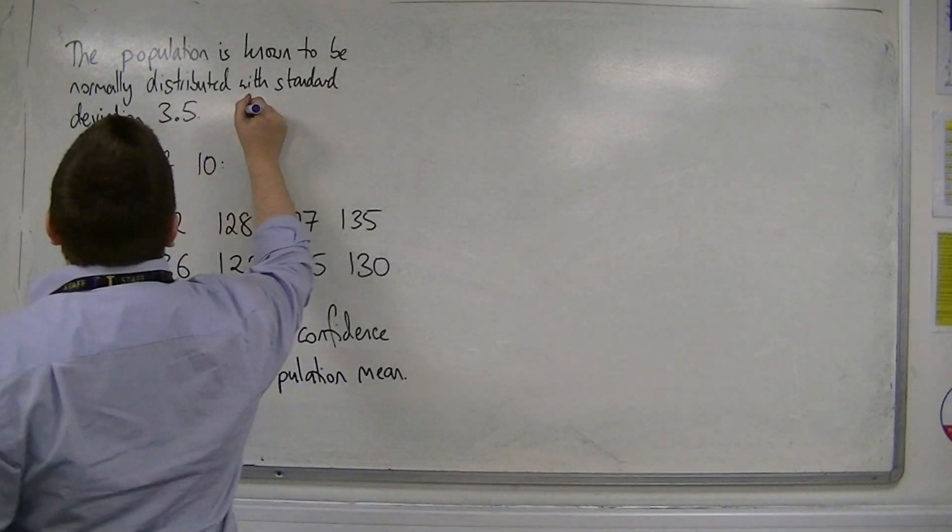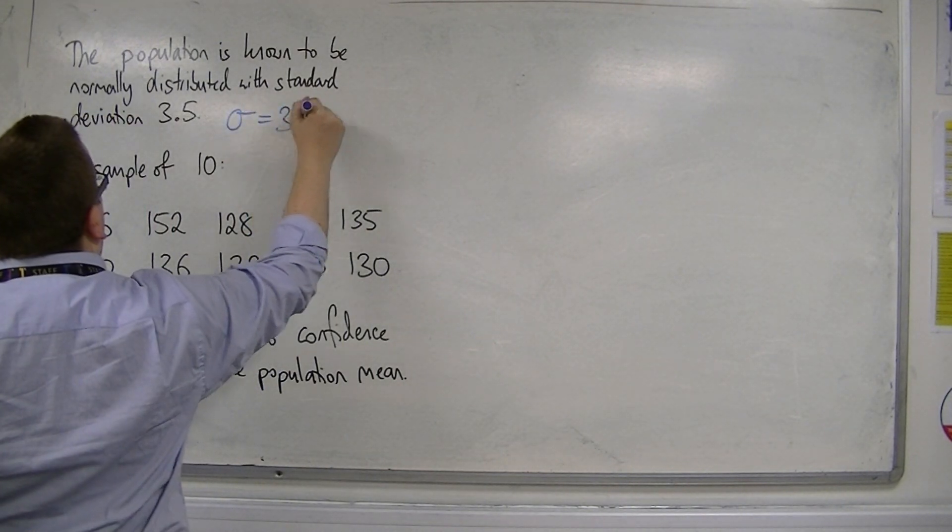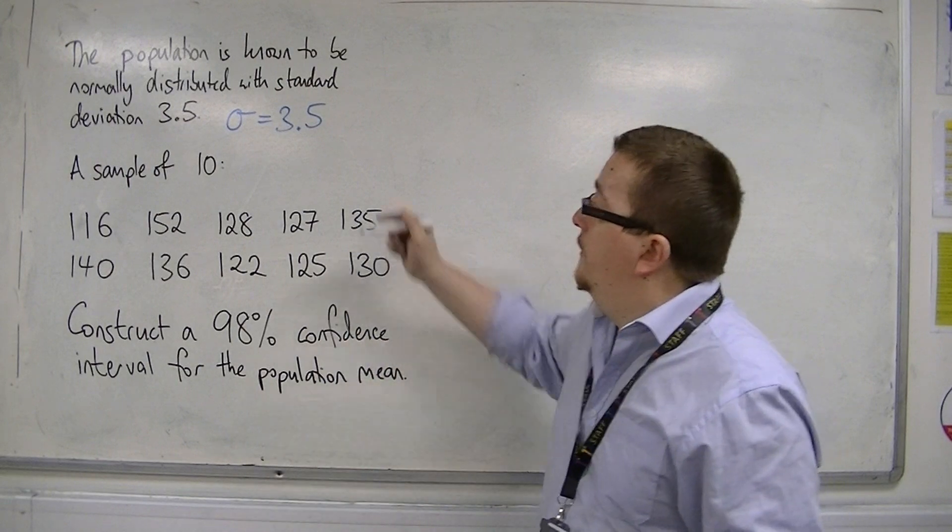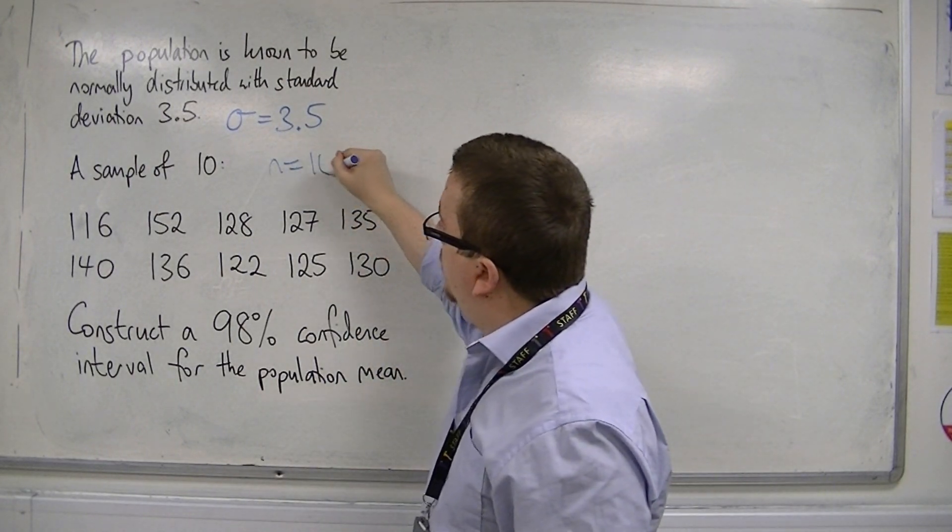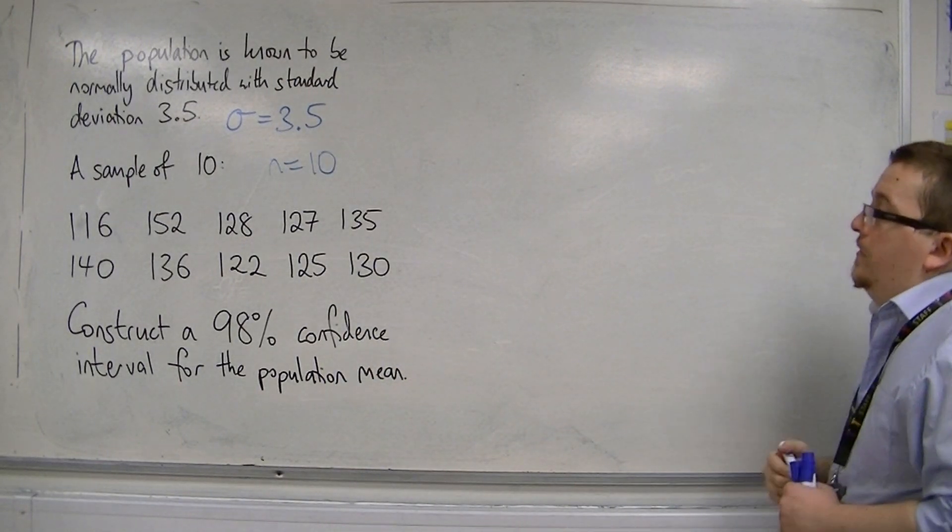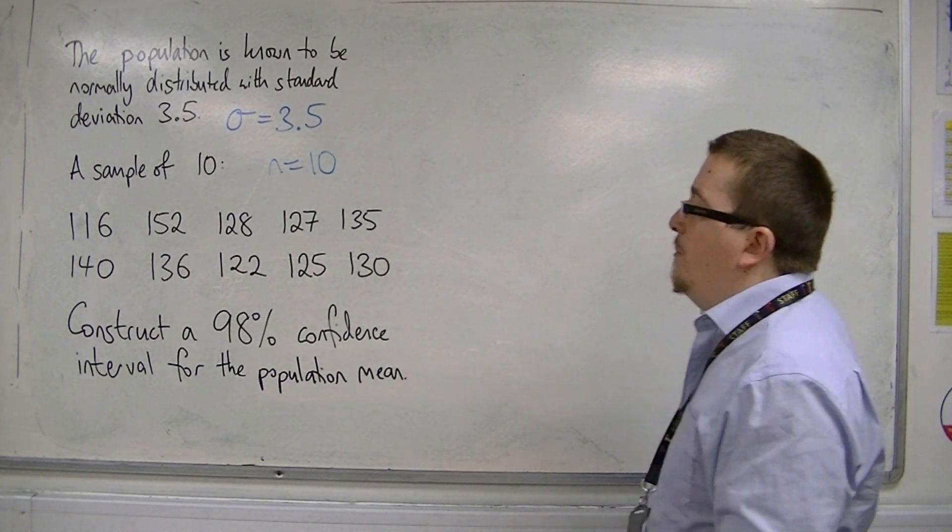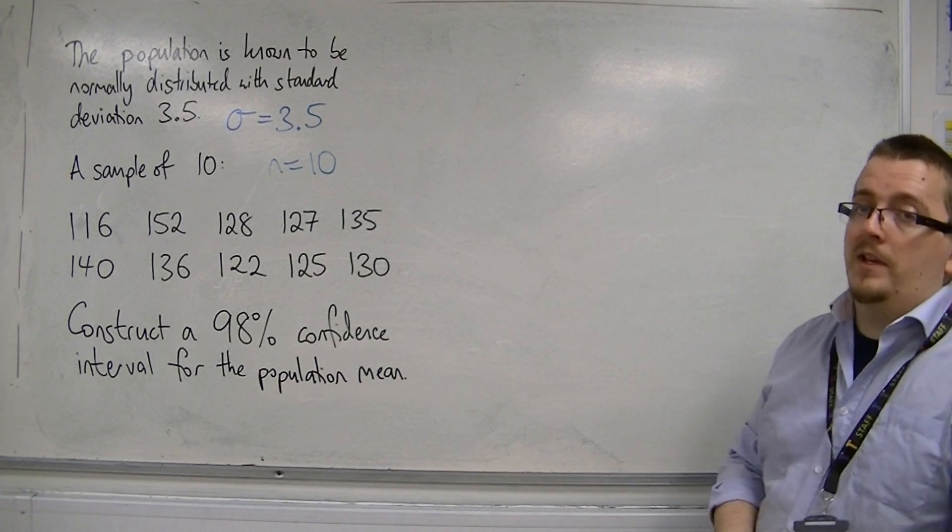So, sigma is 3.5. We've got a sample of 10, so n is 10. And this is my sample. And we want to construct a 98% confidence interval for the population mean.